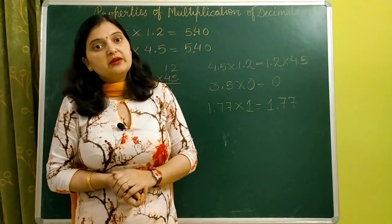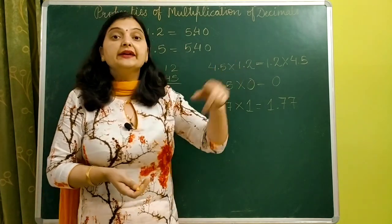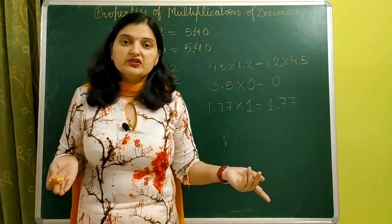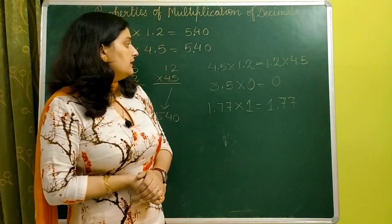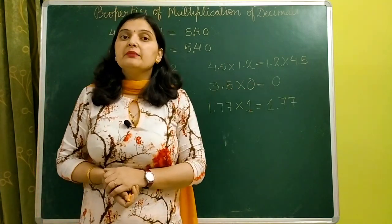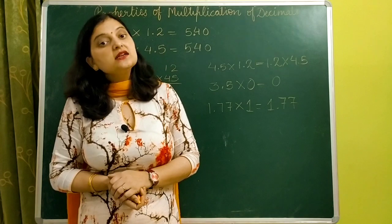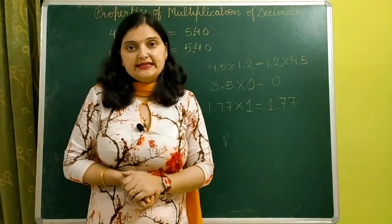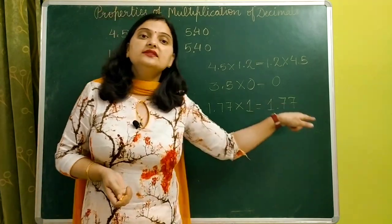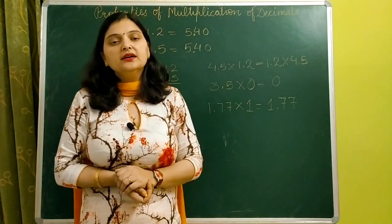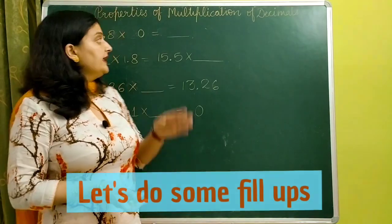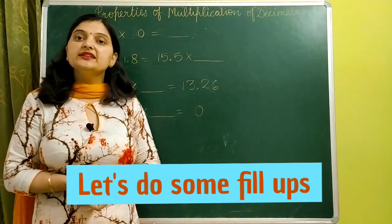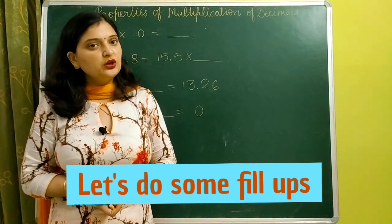To summarize: First, whenever we multiply two decimal numbers in either order, the result remains the same. Second, whenever we multiply a decimal number by zero, we always get zero. Third, whenever we multiply a decimal number by one, we get the same decimal number again. Now here we have a few questions based upon these properties, so let us solve them.